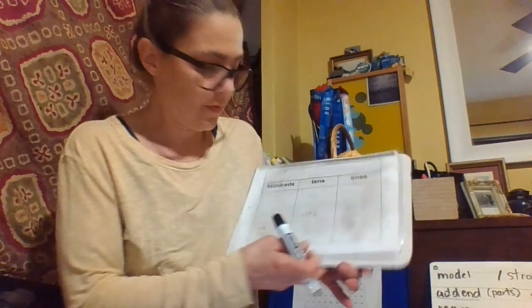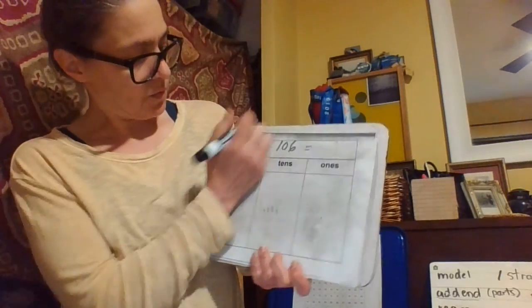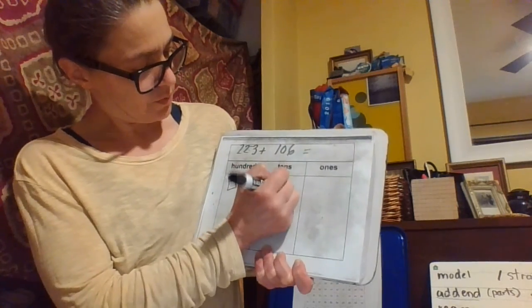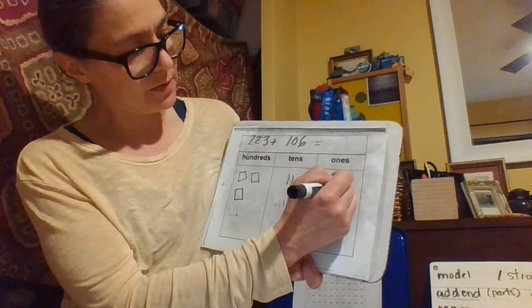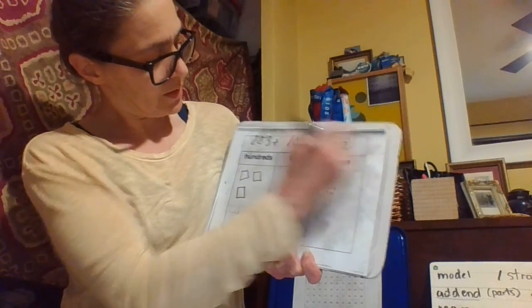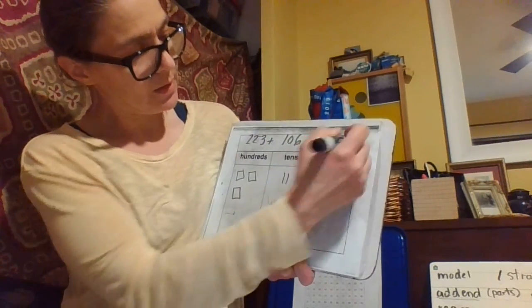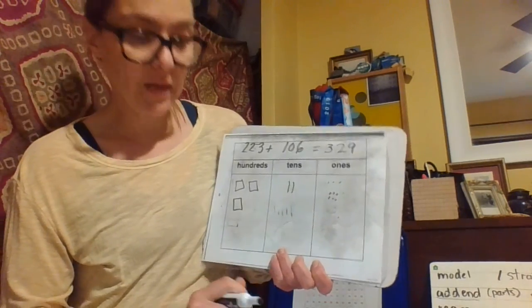Let's get started with number one. It says use place value blocks to find each sum. Regroup if needed. So we have 223 plus 106. They give you the place value map right underneath it in your book. We can draw them. We have 223. We're making our model. We have 100, no tens, and 6. And then we'll count it up. We have 320. 6 plus 3 is 9. So 329. And now let's do the next one.